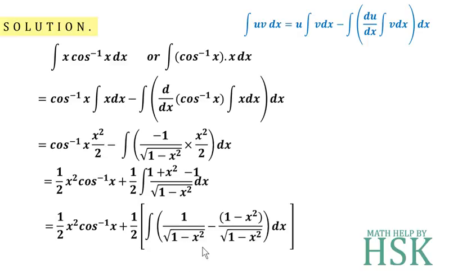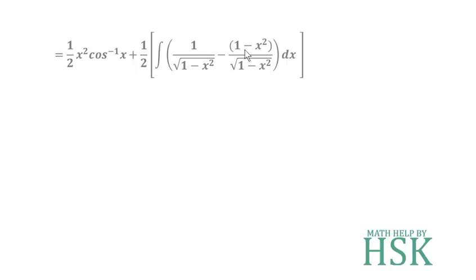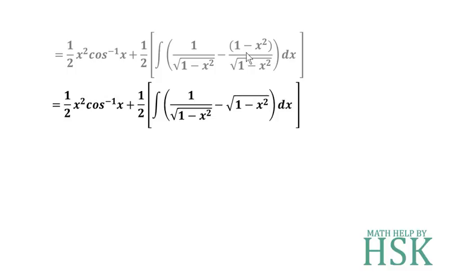We write this as (1/2)x²·cos⁻¹(x) plus (1/2) times the integral of [1/√(1 − x²) minus (1 − x²)/√(1 − x²)] dx. Now, (1 − x²)/√(1 − x²) simplifies to √(1 − x²). So the two terms to integrate are 1/√(1 − x²) and √(1 − x²).